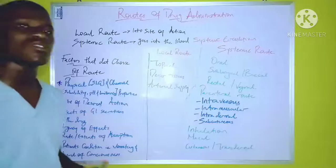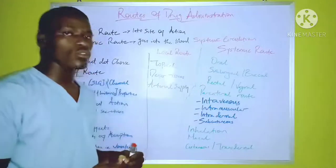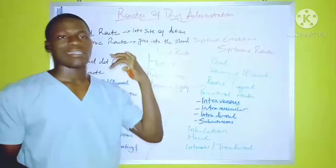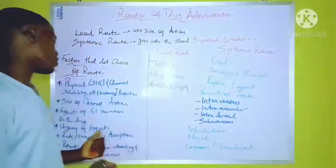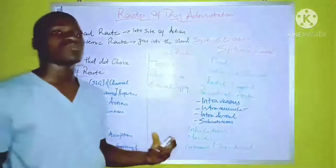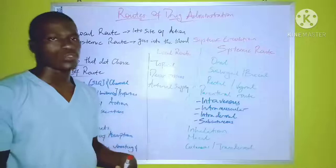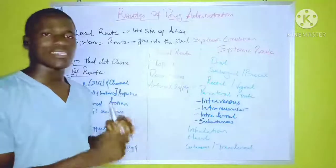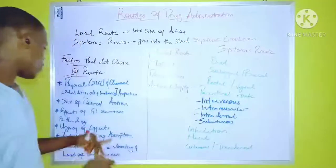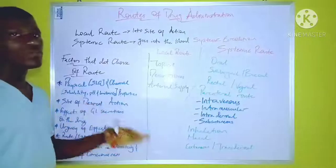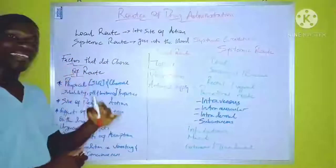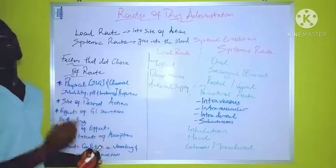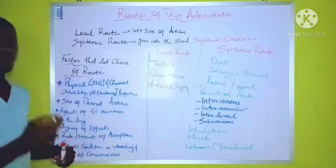Urgency of effect is another factor. In an emergency situation, it is not advisable for drugs to be administered through the oral route due to the delay effect of the drug. Due to urgency, a different route might be chosen. This is because various drugs are available in different forms which can be administered through different routes, and some can be administered through routes that will act quicker or faster.